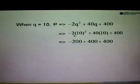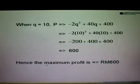So 10 square is equals to 100 times negative 2. The answer is negative 200. 40 times 10 is 400. And then 400 we copy again. So from here 400 plus 400 is equals to 800. And 800 minus 200, the answer is 600. So therefore the maximum profit is equals to 600 ringgit.